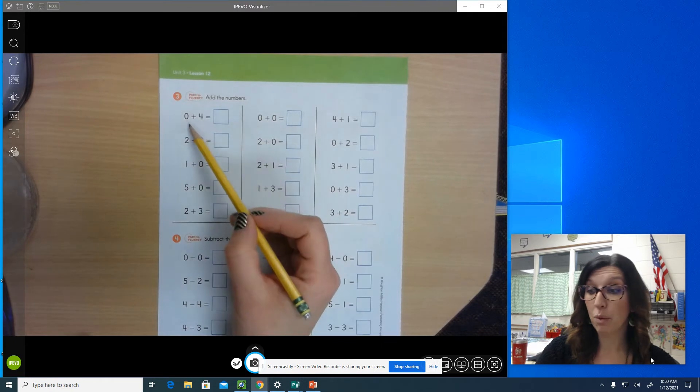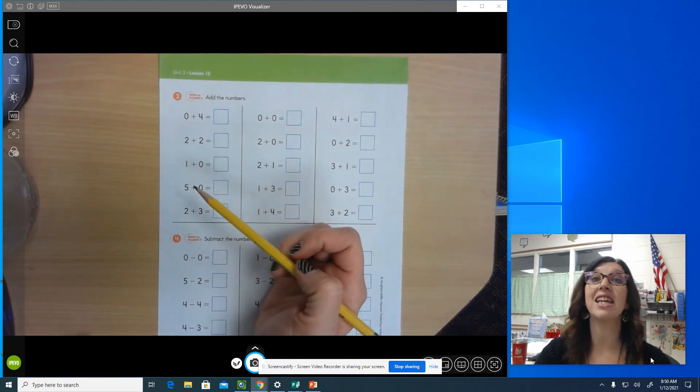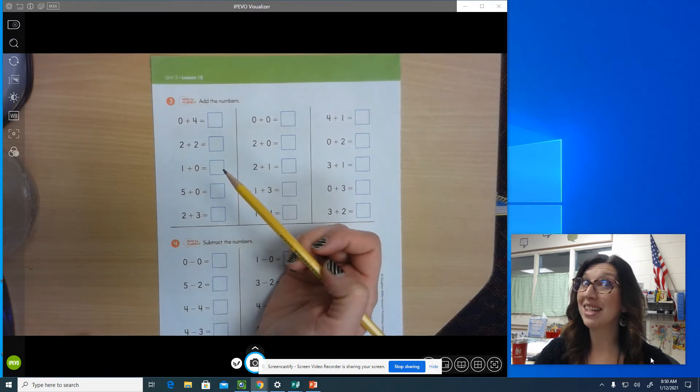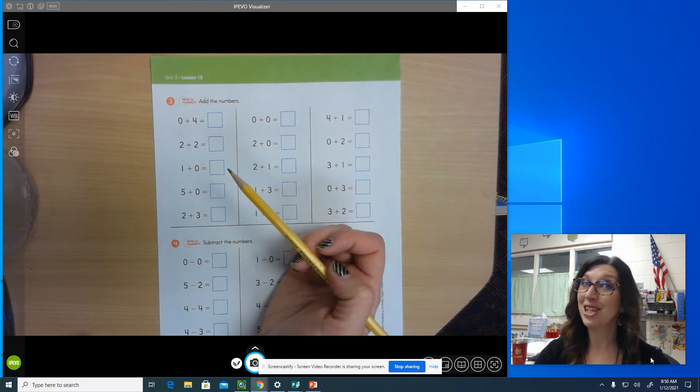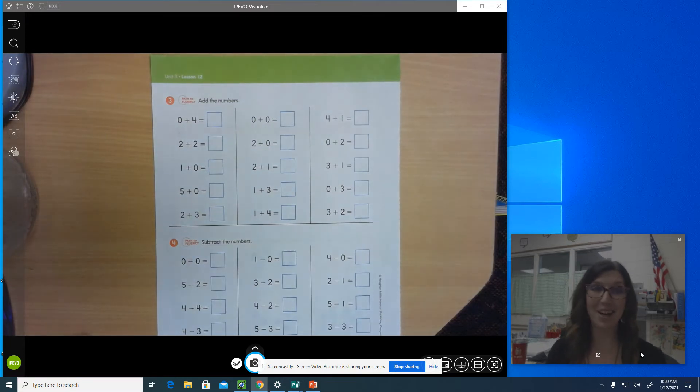Last time what we did was we drew dots for both numbers and then we counted the dots to see how many we had all together. But today we are going to save ourselves some time and I'm going to show you a shortcut. This shortcut is going to make you so happy. Are you ready? Okay, here it comes.